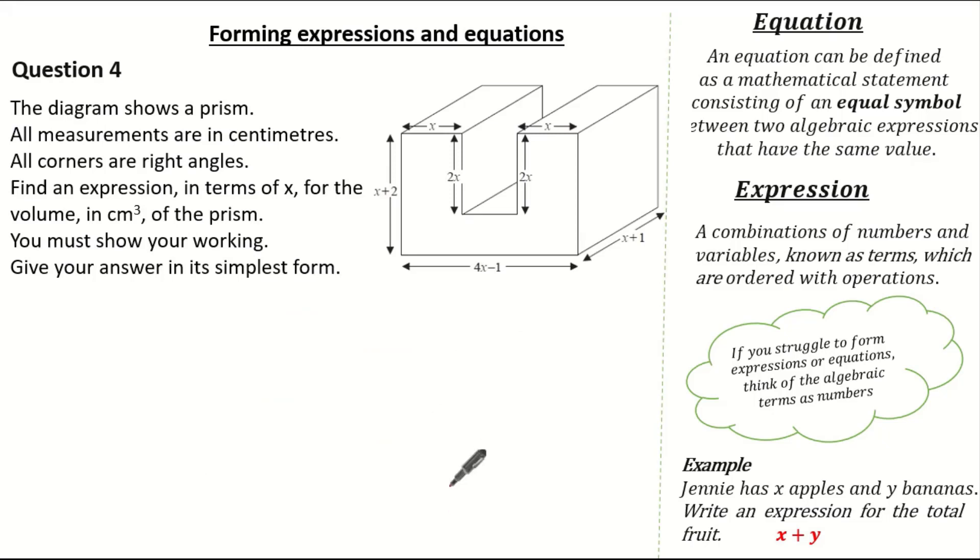Now let's have a look at our last question. In this exam question it states the diagram shows a prism. All the measurements are in centimeters and all the corners are right angles. We are asked to find an expression in terms of x for the volume in centimeters cubed of the prism. And we have got to show all our working out giving our answer in its simplest form. Remember, when forming expressions and equations, sometimes we have to have knowledge on properties of shapes. So here we need to know how to find the volume of a prism. To work out the volume of the prism, it is the cross-sectional area multiplied by the length.